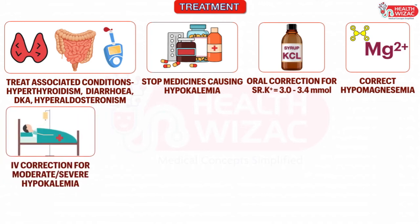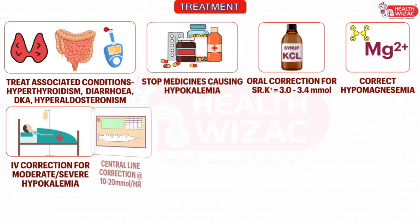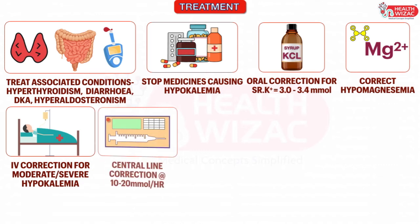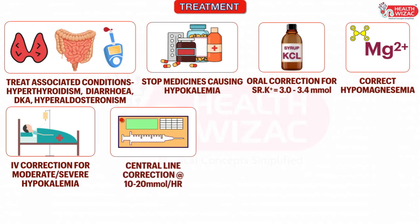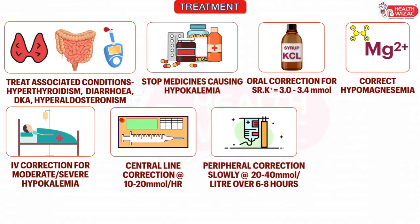Moderate or severe hypokalemia associated with symptoms of hypokalemic periodic paralysis or arrhythmias should be treated aggressively through intravenous correction. Corrections should be done ideally through central line access at the rate of 10 to 20 millimoles per hour. If peripheral lines are used, corrections should be done slowly at the rate of 20 to 40 millimoles per litre over 6 to 8 hours to avoid chemical phlebitis.